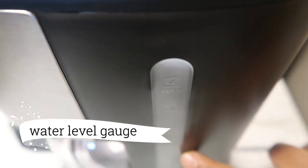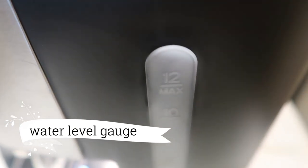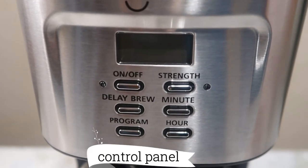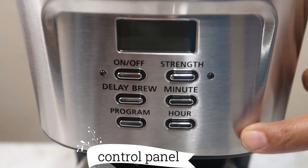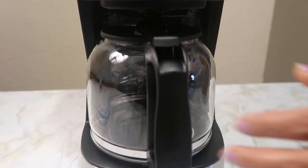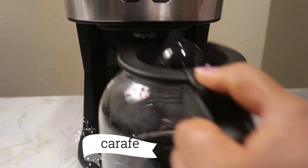the water level gauge - you can add water up to the maximum level, which is totally 12 cups. Let's see the control panel. The control panel includes on/off indicator, LCD display, and strength indicator. This is the carafe which includes